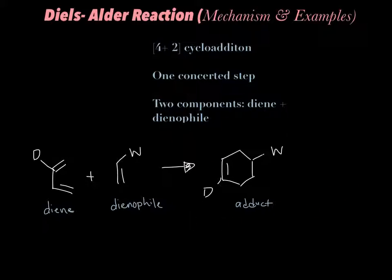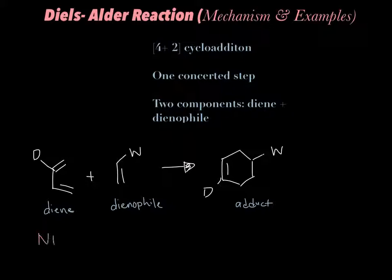The Diels-Alder reaction is commonly known as a 4+2 cycloaddition. The 4 refers to our diene, which is a 4 pi electron component, and the 2 refers to our dienophile, which is the 2 pi electron component. Notice that our diene is a conjugated system, which means there is a single bond between two pi bonds. Our diene is known as our nucleophile since it is electron rich, and our dienophile is known as our electrophile since it is electron poor. Also notice that the two components in the reactants contain a certain amount of carbons that get placed in our product.